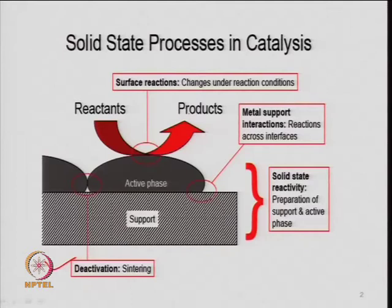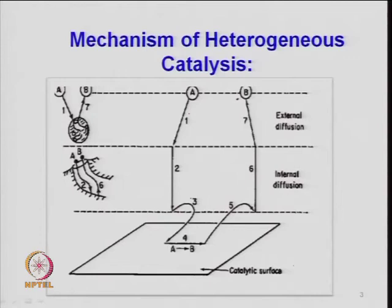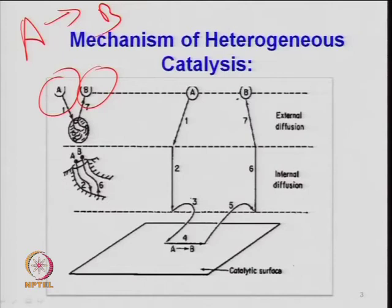The changes which take place during the reaction can be studied by understanding the mechanism of a reaction — that is the catalytic reaction mechanism. Suppose there are two species A and B: A goes to B. A may be a gas species or vapor; it comes onto the surface of a solid and adsorbs there.